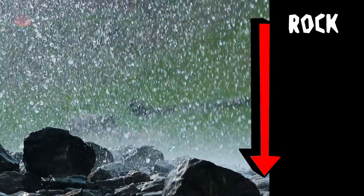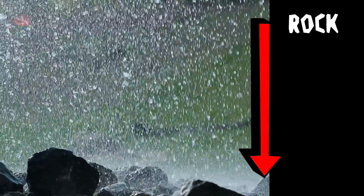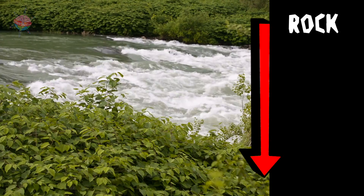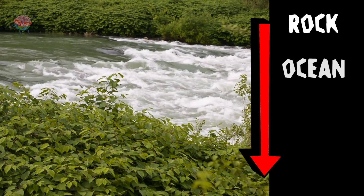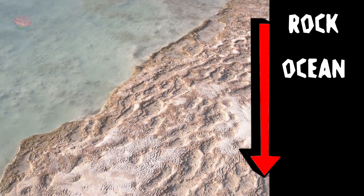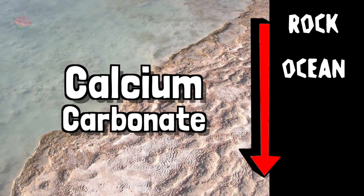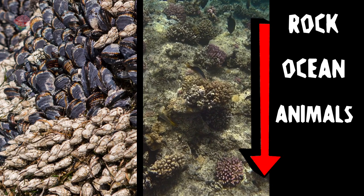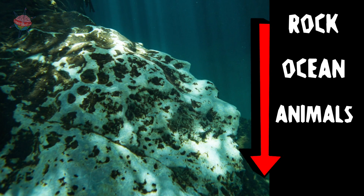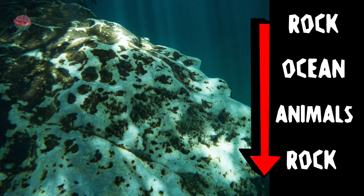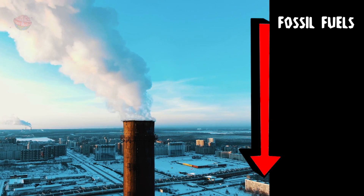Rocks: rainwater slowly wears away the top layer of rocks. Calcium and other natural chemicals from the rocks are washed into nearby rivers and out to sea. Carbon dioxide in the air reacts with calcium in the water and forms calcium carbonate. Lots of marine animals make their shells or exoskeletons out of calcium carbonate. When they die, their shells get buried in the sediment at the bottom of the ocean and form limestone.